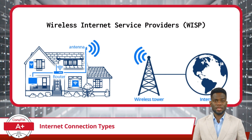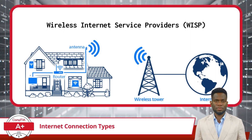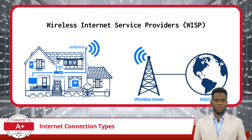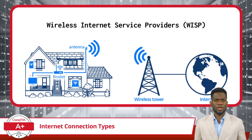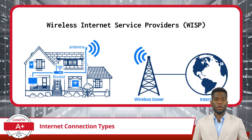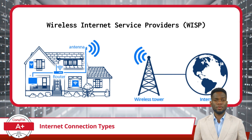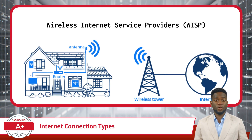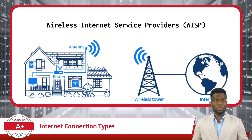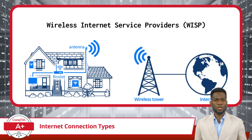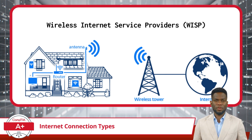Lastly, wireless Internet service providers — also known as WISPs — use fixed wireless technology to provide Internet access in areas that might not be served by wired connection options. A small dish or antenna is installed at your location to connect to the provider's tower. WISPs can be a great option in rural or underserved areas, and the setup is relatively simple without requiring extensive infrastructure. However, like satellite Internet, WISPs can be susceptible to weather conditions and might offer lower speeds compared to wired connections.